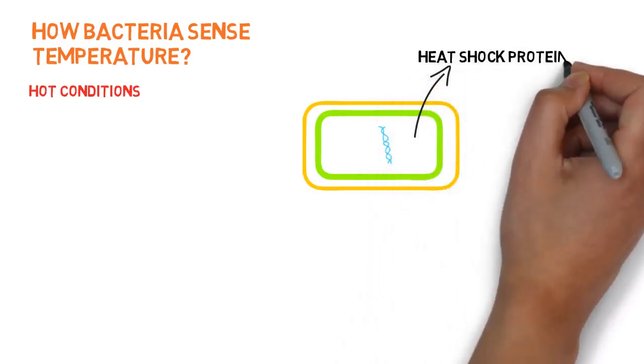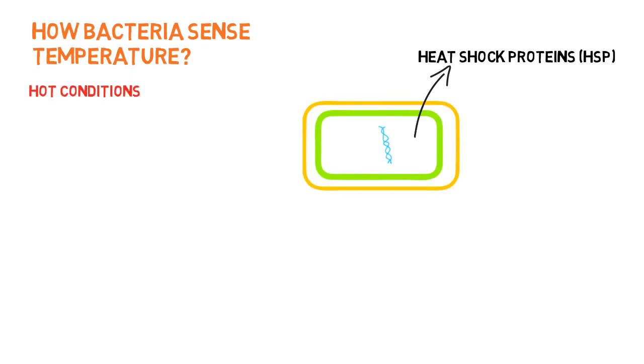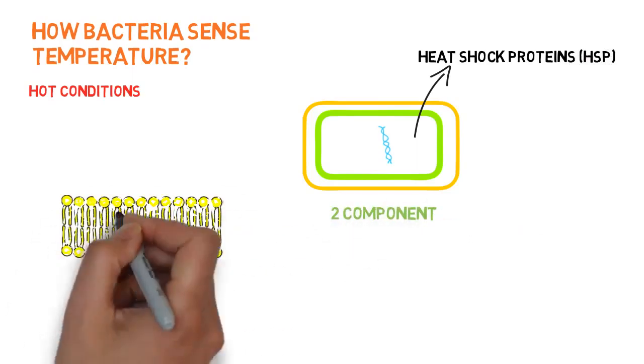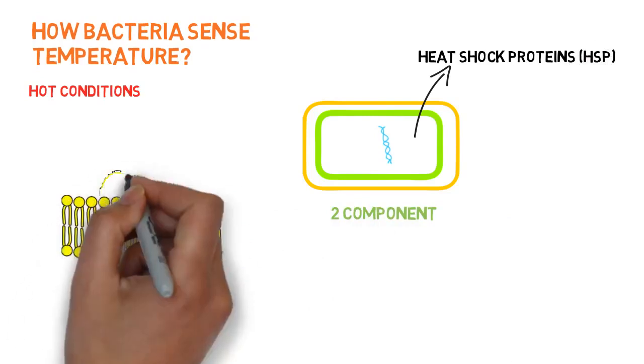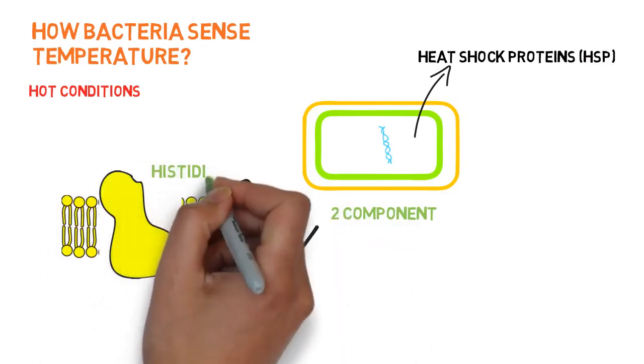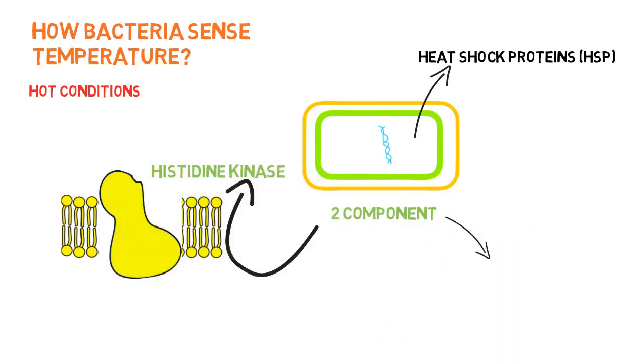For the detection and response to these high environmental temperature conditions, bacteria have a two-component system. In this two-component system, two proteins are present: one is called histidine kinase and the other is the response regulator.